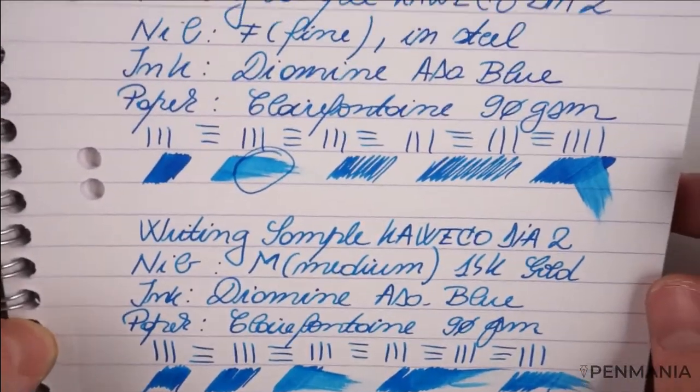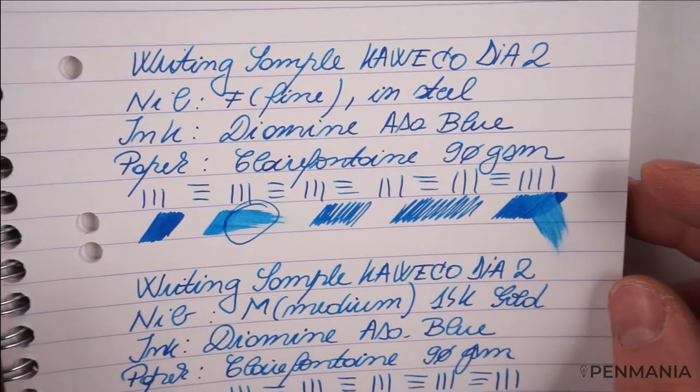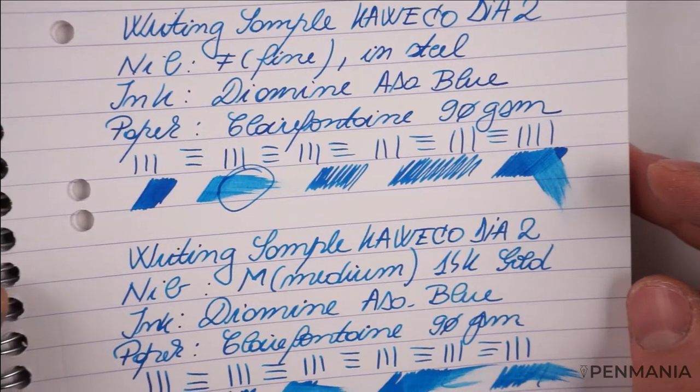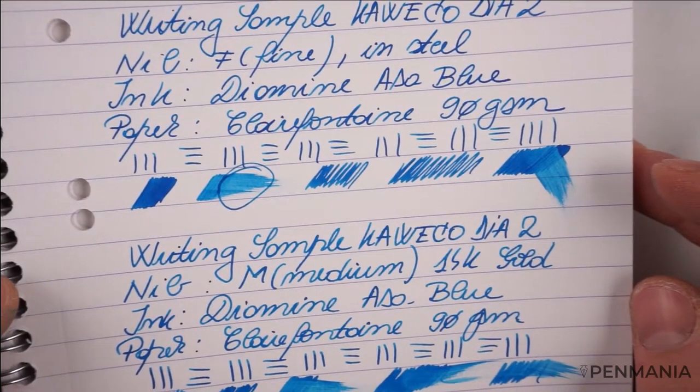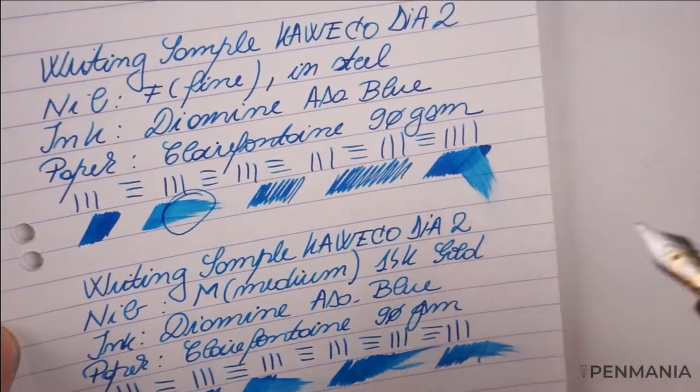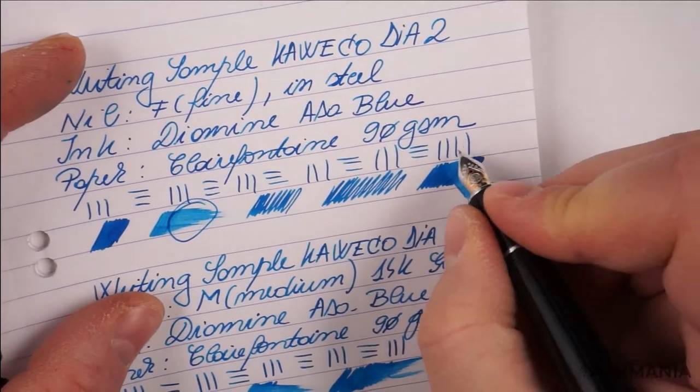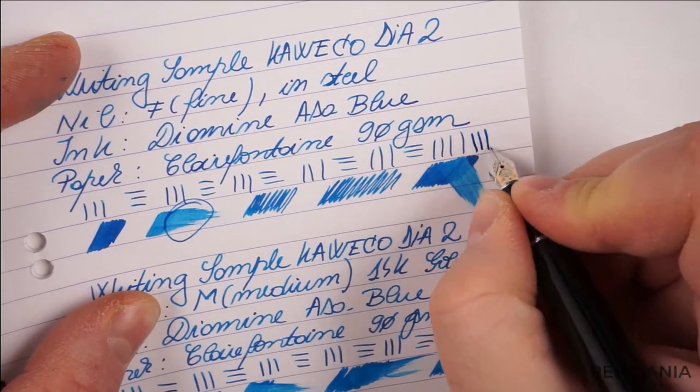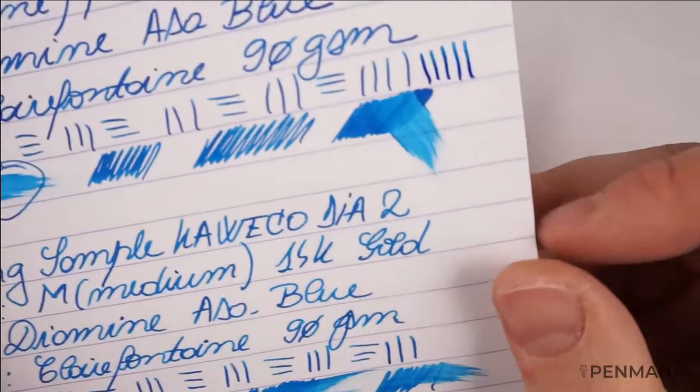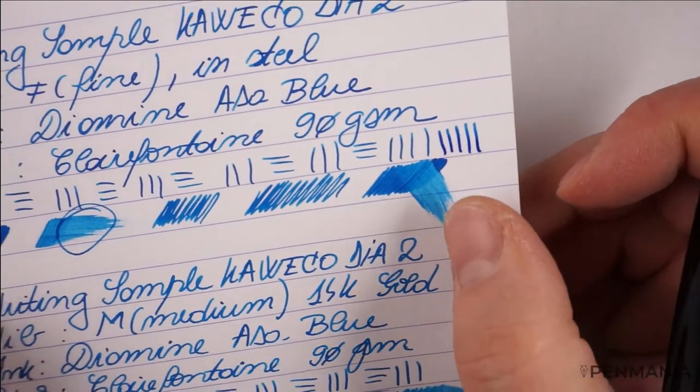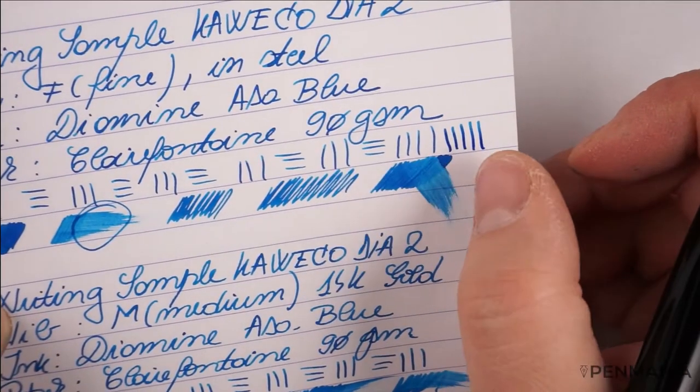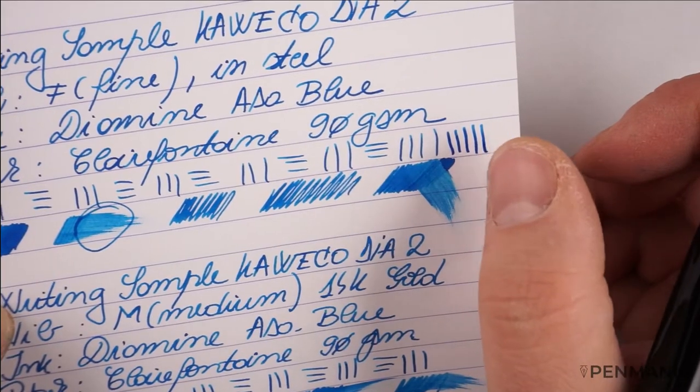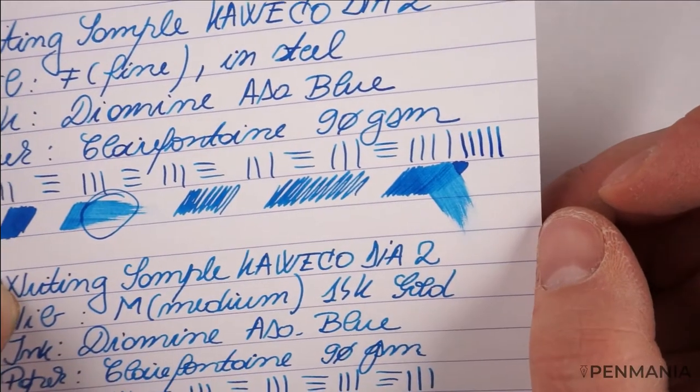I hope you can see the difference between the two. It's not a lot, but it is there. This is the fine nib and this is the medium nib. Hope the camera will focus well. Yes, there is a difference between the medium gold nib and the fine steel nib.